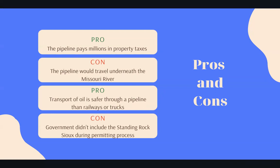A con of the pipeline is that it travels underneath the Missouri River. This is a con because the Missouri River is the drinking water source for the Standing Rock Sioux. If the pipe were to leak or burst, it would then leak into the water, which is not safe. Another pro of the Dakota Access Pipeline is that the transport of oil through the pipeline is safer than transporting it on railroads or in trucks.